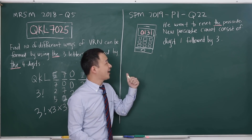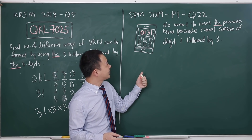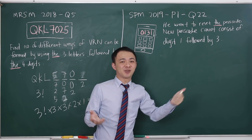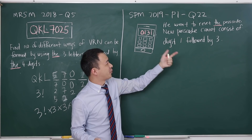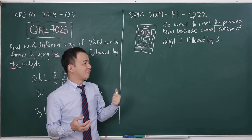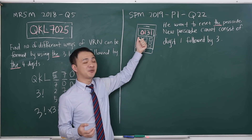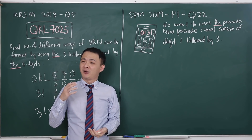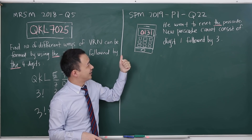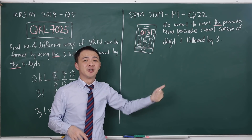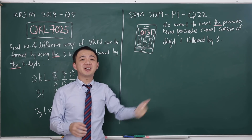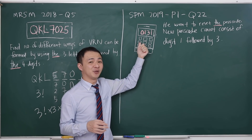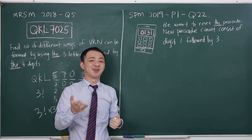Coming back to the SPM question, I struggled because the question doesn't clearly say whether to use only these four digits or any number from zero to nine. The question just says they want to reset the passcode and the new passcode cannot consist of digit 1 followed by digit 3. So I will show two different methods — one using only these four digits, and one assuming you can use any number.